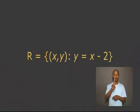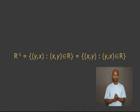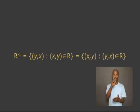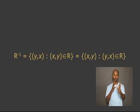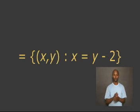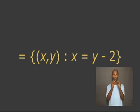Let's get back to our lesson. Welcome back, students. Were you able to find the inverse of R? Let us look at the solution together. In relation R, the second coordinate is the first coordinate minus 2. The inverse of R equals the ordered pair (Y, X), such that X is R-related to Y. This is equal to the ordered pair (X, Y), such that Y is R-related to X. Therefore, the ordered pair (X, Y) is such that X equals Y minus 2.